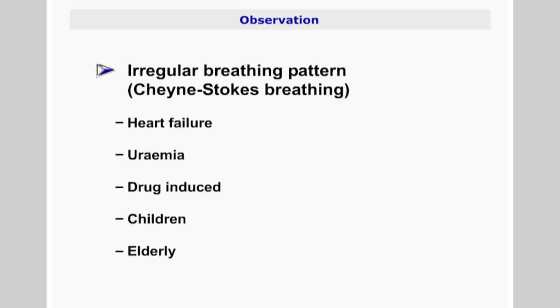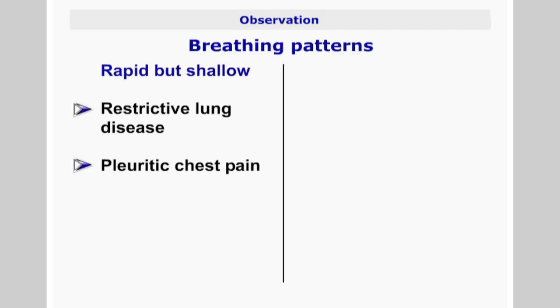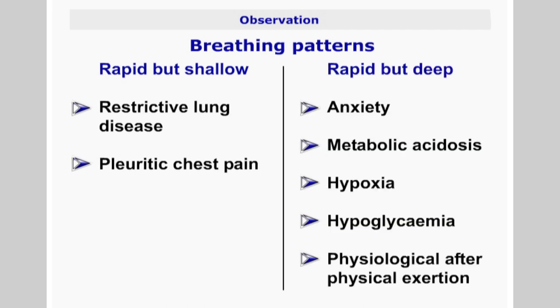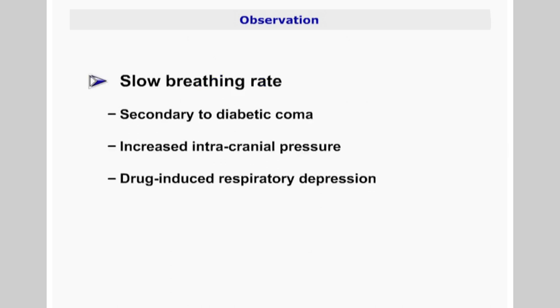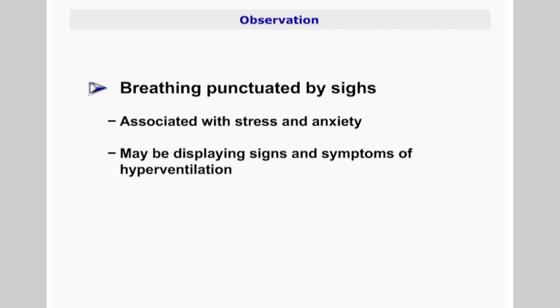Alternating between long periods of no breathing and deep respirations is described as Cheyne-Stokes breathing. This pattern may indicate heart failure, uremia, or may be drug-induced, and may also be seen in children and the elderly. Rapid, shallow breathing may be caused by restrictive lung disease and pleuritic chest pain. Rapid but deep breathing is seen in states of anxiety, metabolic acidosis, hypoxia, hypoglycemia, or physiologically after physical exertion. Slow breathing can be secondary to diabetic coma, increased intracranial pressure, or drug-induced respiratory depression. A breathing pattern punctuated by frequent sighs is often associated with stress and anxiety, with the patient displaying signs of hyperventilation.